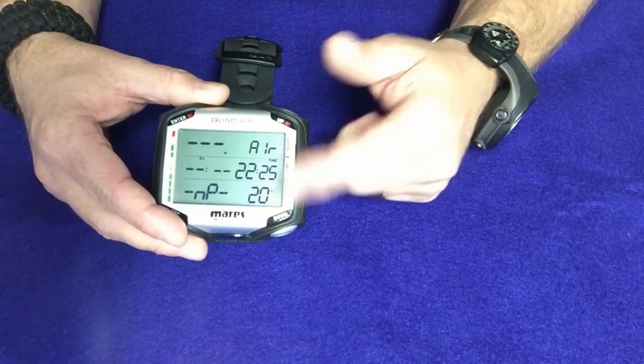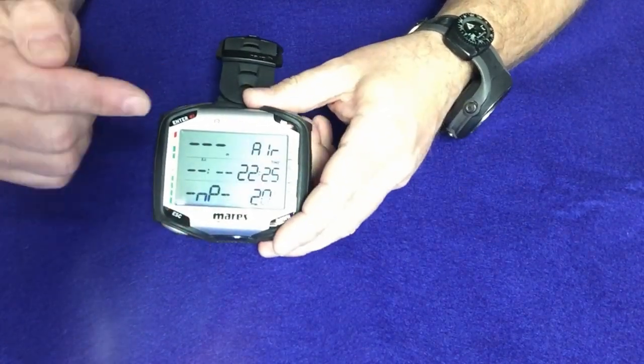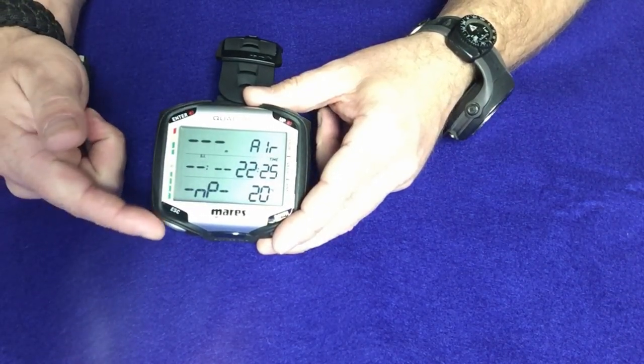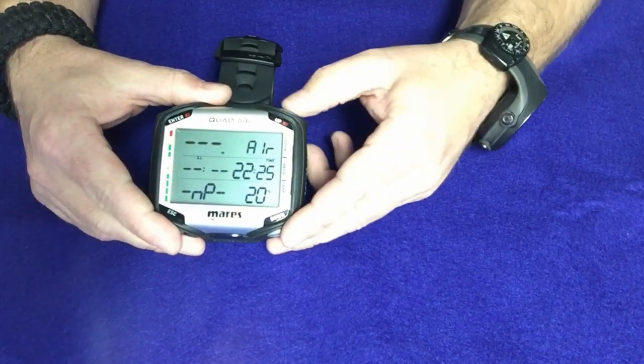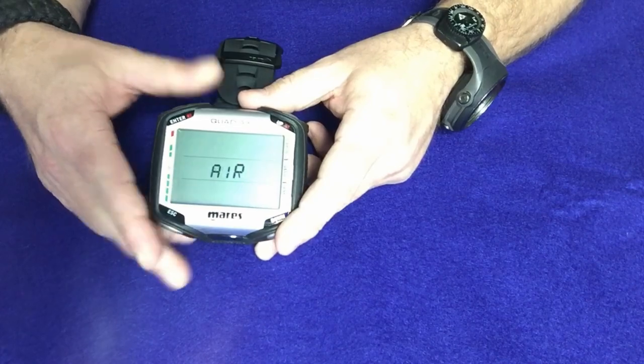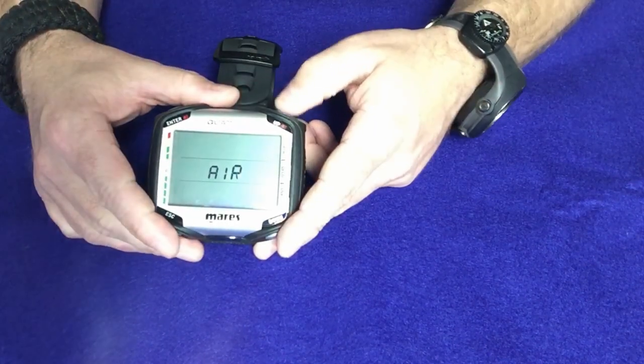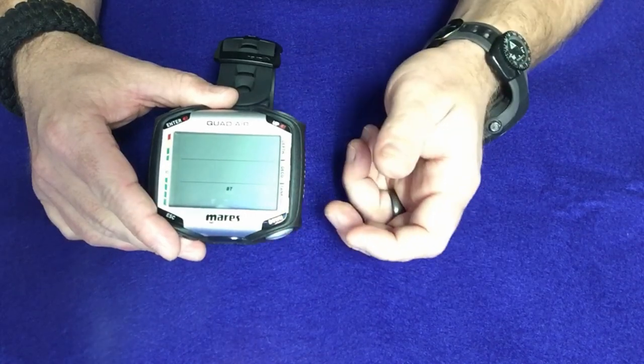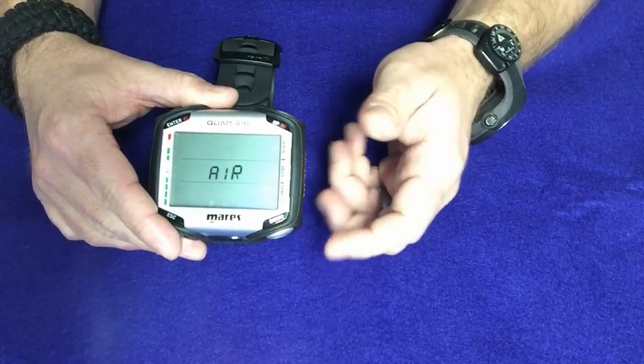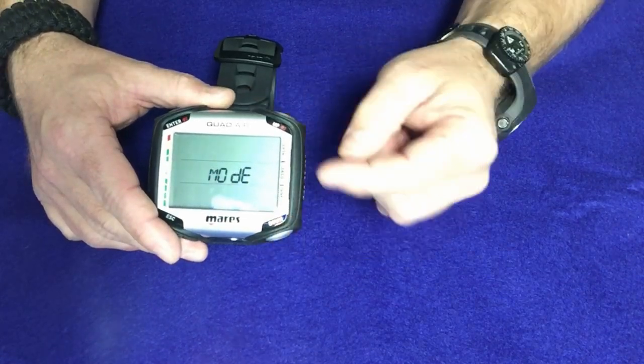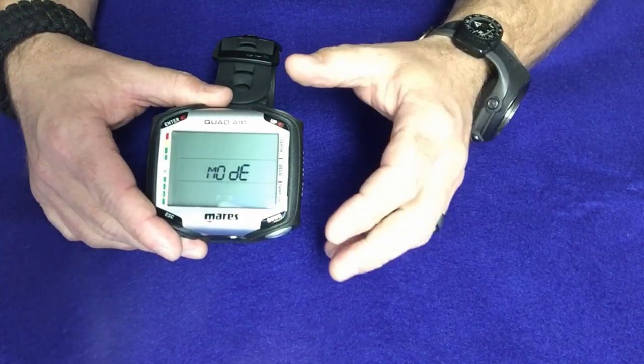Now we're going to be using the up and down buttons to scroll through. We are going to use the enter button to select with, and then to back out of the menu, we'll be using the escape button. So starting with the up button, I'm just going to simply scroll through till I get to mode, I'll hit the enter button, and it's going to go into this mode here. And I can of course select either air or nitrox, or I can switch over to a bottom time mode as well. We're just going to simply leave it in the air mode.